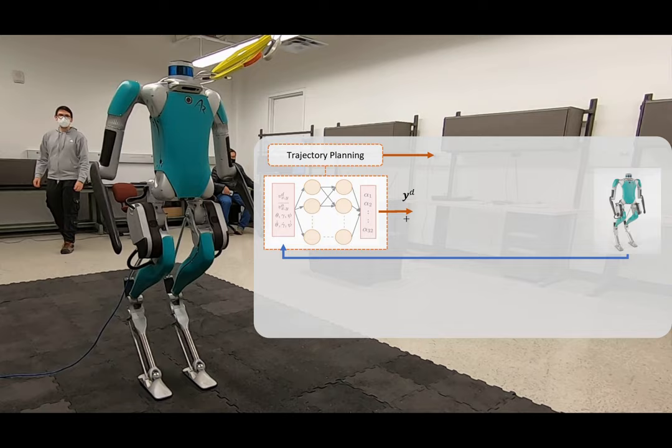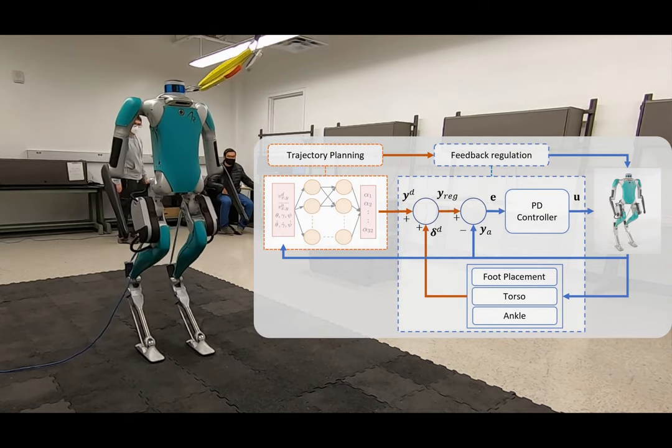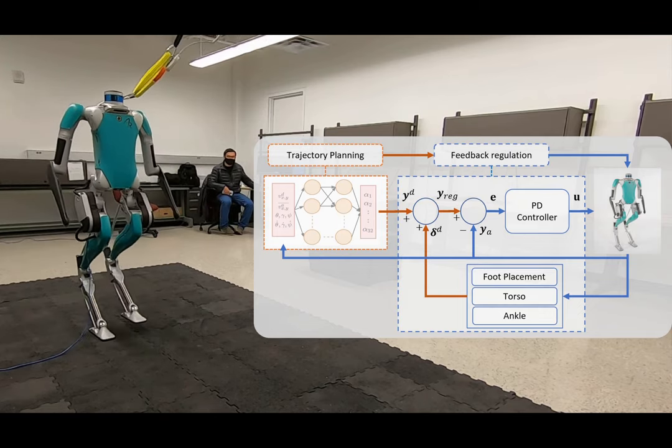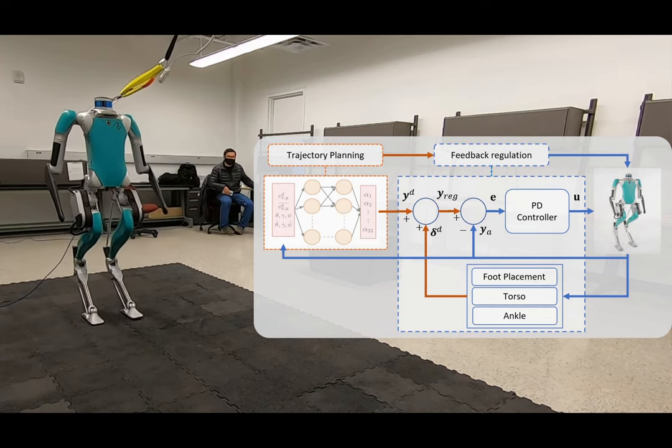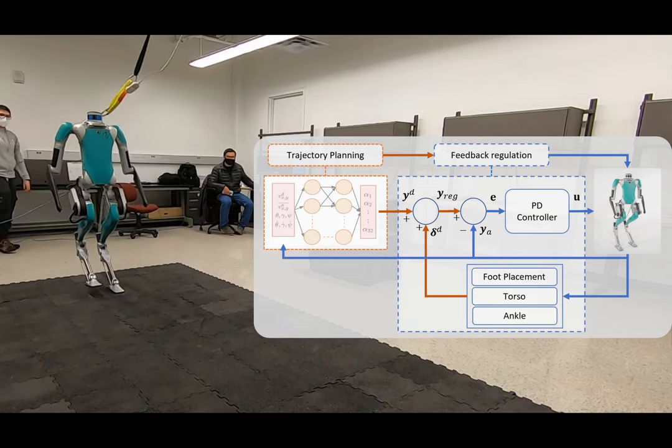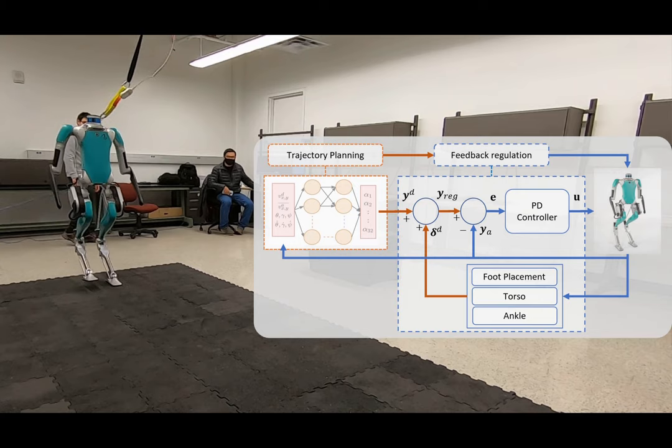The low-level model-based regulation applies compensation to the reference trajectories at a higher frequency based on instantaneous state feedback. This feedback-based trajectory regulation compensates for uncertainty in the environment and, based on our experimental observation, it is one of the key factors leading to effortless sim-to-real transfer.